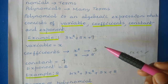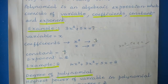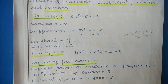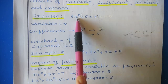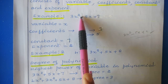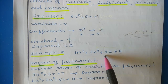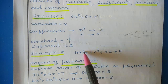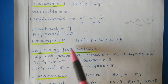So in the case of a polynomial we should have a variable, coefficient, constant, and exponent. Related to the exponent value we have a concept called the degree of a polynomial — the degree is the highest power of the variable in the polynomial. For 3x² + 5x + 7, the highest power of x is 2, so the degree is 2. For 4x³ + 3x² + 5x + 8, the highest power of x is 3, so the degree of that polynomial is 3.